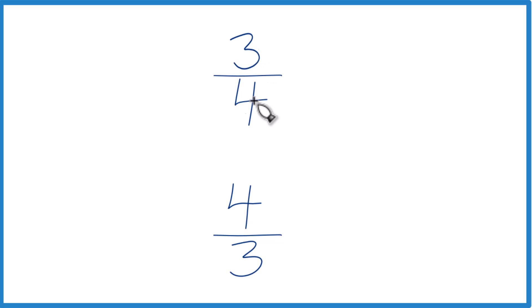3 is smaller than 4. This number is going to be less than 1. 4, it's larger than 3. This number is going to be greater than 1. Because here we're dividing 4 into 3. Here we're trying to divide 3 into 4. So this is going to be greater than 1. This will be the greater fraction.